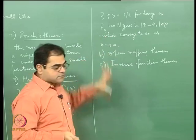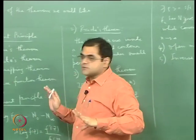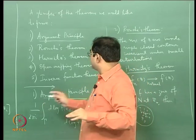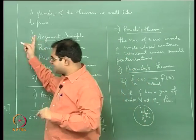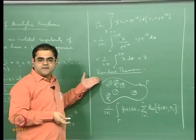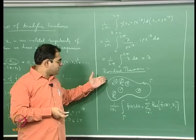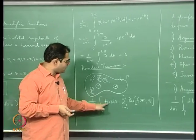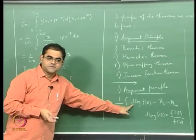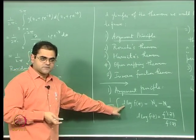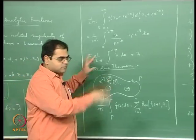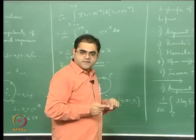All these are somehow connected with zeros of analytic functions, and they can all be derived starting from the argument principle, which is essentially the residue theorem applied not to f but to its logarithmic derivative f'/f. So the root for everything is the residue theorem. We will do this in the forthcoming lectures.